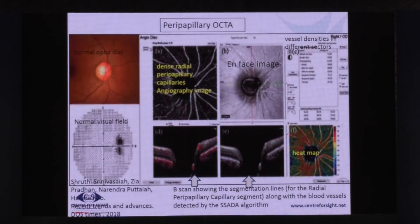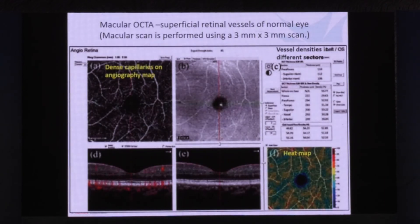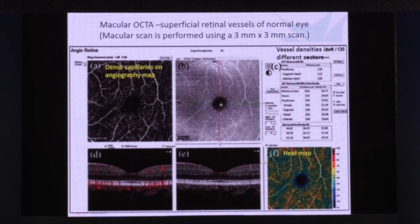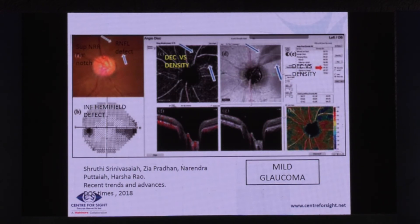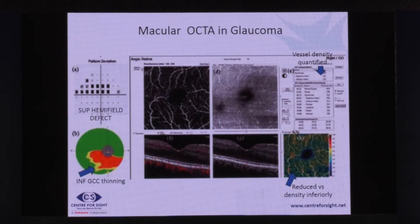The superficial macular density is calculated over a 1.5 millimeter circular annulus centered on the macula. Looking at a peripapillary OCTA of a normal individual with a normal optic disc and normal visual field, you can see dense peripapillary capillaries in the angiography image. On the heat map, blood vessels appear absolutely normal and vessel densities are given in different sectors. In a patient with mild glaucoma, looking at the heat map you find a sector showing a lot of blue — indicating decreased blood vessels — with the vessel density in that area also reduced.